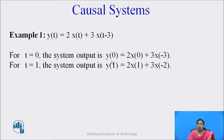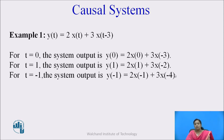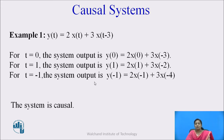For t = −1: y(−1) = 2·x(−1) + 3·x(−4). Here again the output depends upon the present value and past value of the input, where −1 is the present value and −4 is the past value of the input signal. In all cases — t = 0, t = 1, and t = −1 — the output depends upon the present and past value only. So we can say that this system is a causal system.